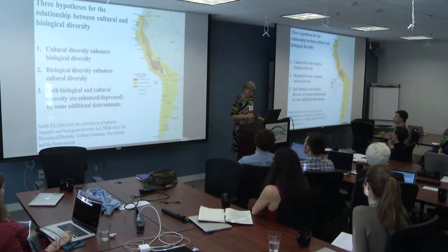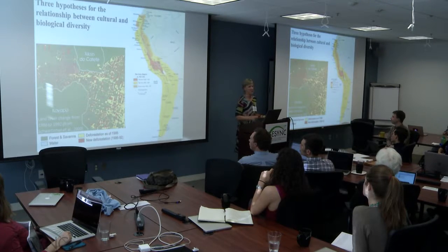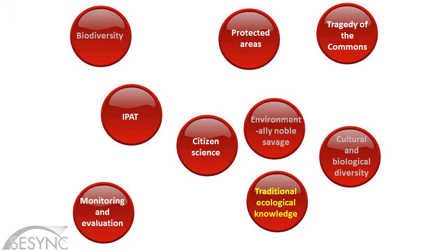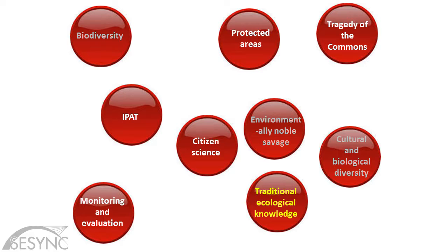And just to complicate it even more, a map from Schwarzman shows how it turns things upside down—indigenous people themselves are protecting their land extremely well. Up to the next button, which is going to be traditional ecological knowledge.